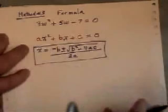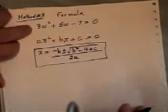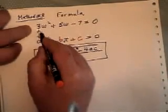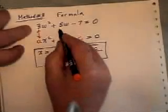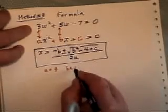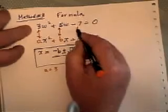Now in our case, let's look at our original question up here. Then a is equal to 3, b is equal to plus 5, and c is equal to minus 7.